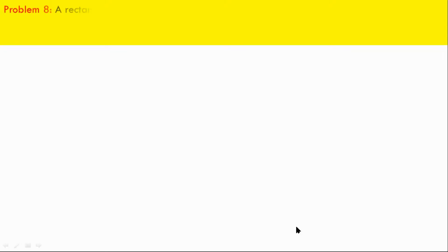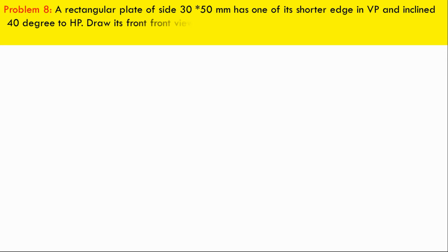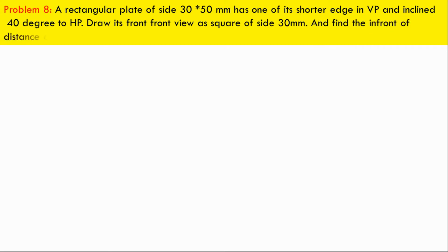A rectangular plate of side 30x50 mm has one of its shorter edges in the VP and inclined 40 degrees to the HP. Draw its front view as a square of side 30 mm, and find the in-front-off distance and surface angle with respect to the VP.